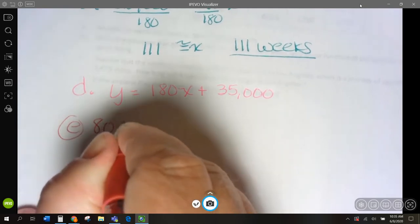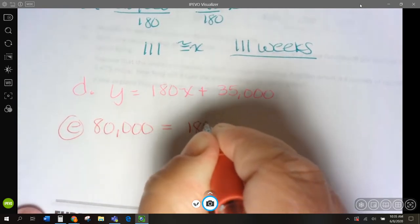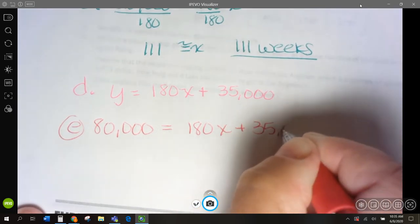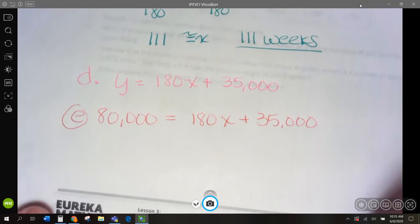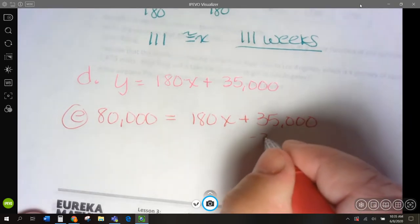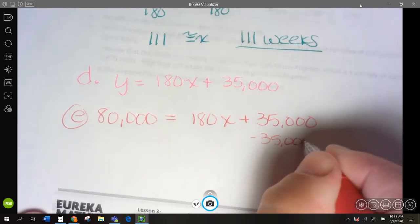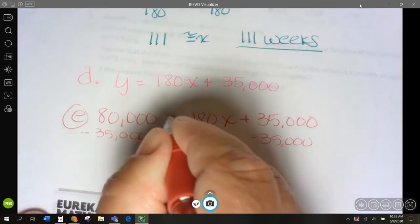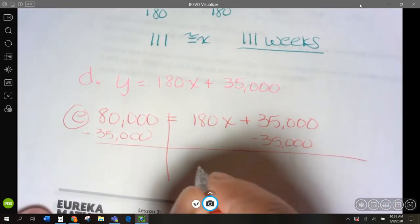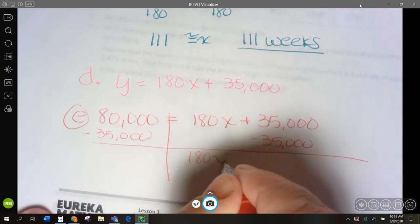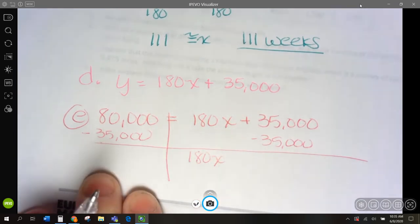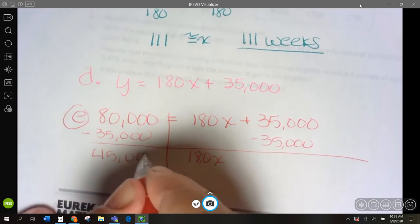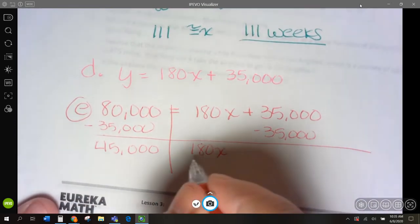80,000 equals 180x plus 35,000. Well, minus the 35,000. We get 180x equals 45,000.